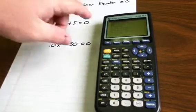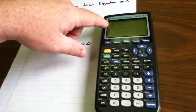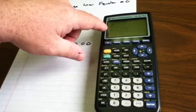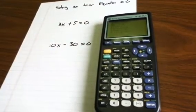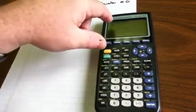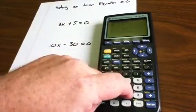When I open the Calc menu, you'll notice there are several options: one is Value, two is Zero, three is Minimum, four is Maximum, five is Intersect—we'll be using many of these in the class. For this particular function, you want to use the Zero function, which is number two, so you select two.